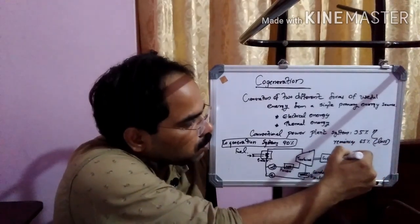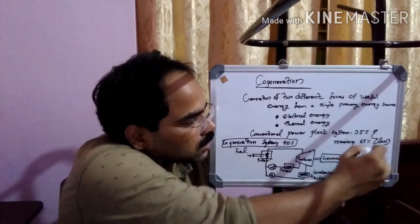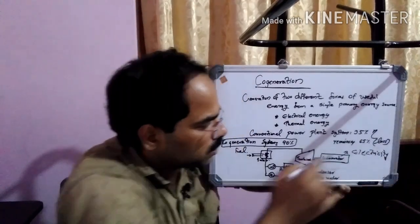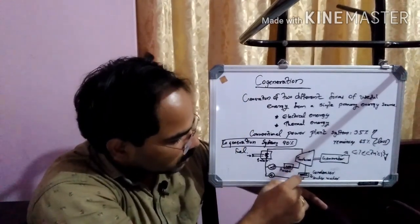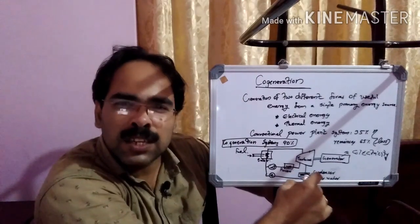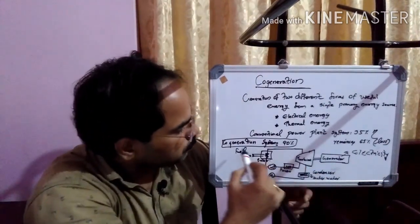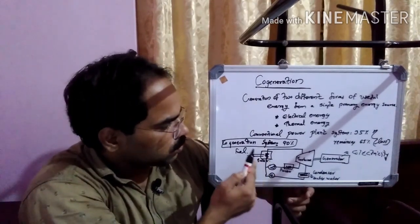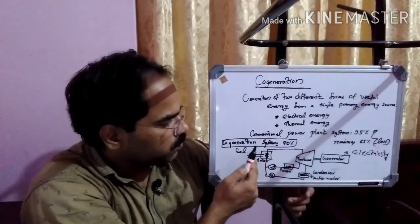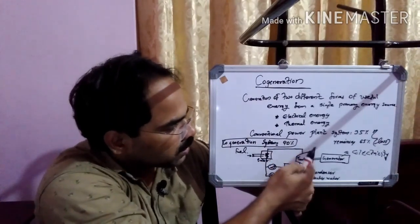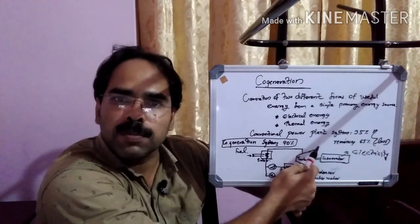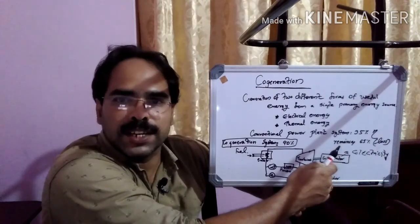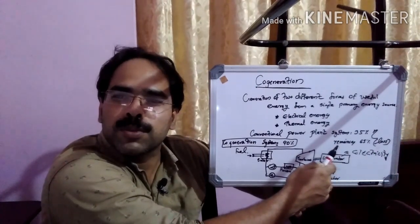Here, the useful energies we are producing: one is electricity — with the help of a generator we can produce the electricity. Similarly, the other form of useful energy is thermal energy. Here our input is fuel only. The fuel we are giving into this system. With the help of a boiler, that fuel is burning. Automatically, with the help of that heat energy, we can operate this turbine. Once this turbine rotates, correspondingly electrical energy we can generate with the help of a generator.